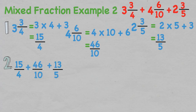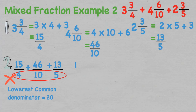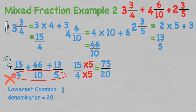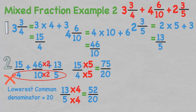The fractions aren't alike, so we need to find the lowest common denominator — in this case it is 20, as all the denominators can go into 20. To convert 15 over 4 to over 20, we multiply the denominator by 5; whatever we do to the denominator we must do to the numerator, giving 75 over 20. For 13 over 5 to over 20, we multiply by 4. For 46 over 10 to over 20, we multiply by 2.